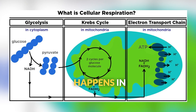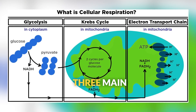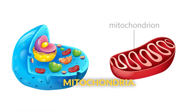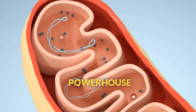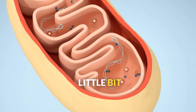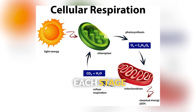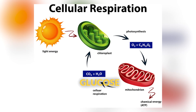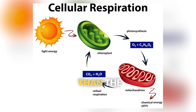This process happens in three main stages, mostly in the mitochondria — those powerhouse organelles we've learned just a little bit about. Each stage extracts even more energy from glucose molecules than the last.